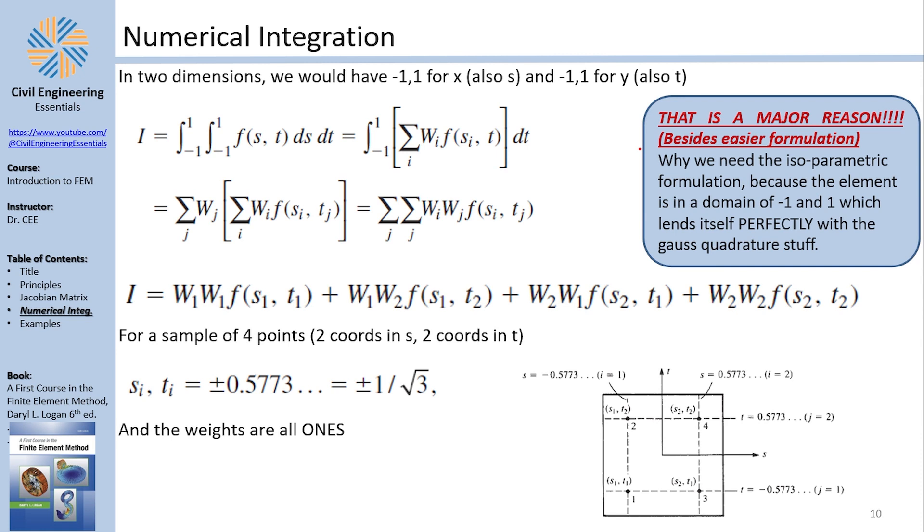One of the reasons, not the only reason, one of the reasons why we are using the isoparametric formulation is because it actually goes from negative one to one in s and t. This lends itself perfectly into the numerical integration. Also, the isoparametric formulation itself is easy to be programmed. If you want to check out the LST element that I tried to explain, you will realize how crazy those equations are. This integration here, because it's a double integration, becomes a double summation.